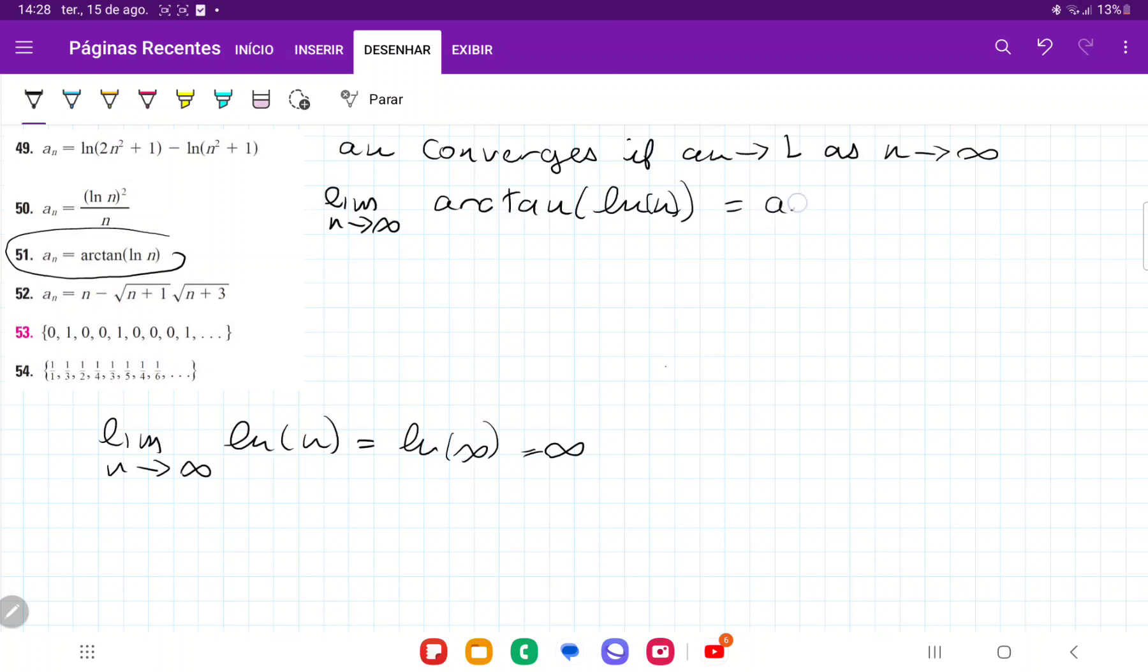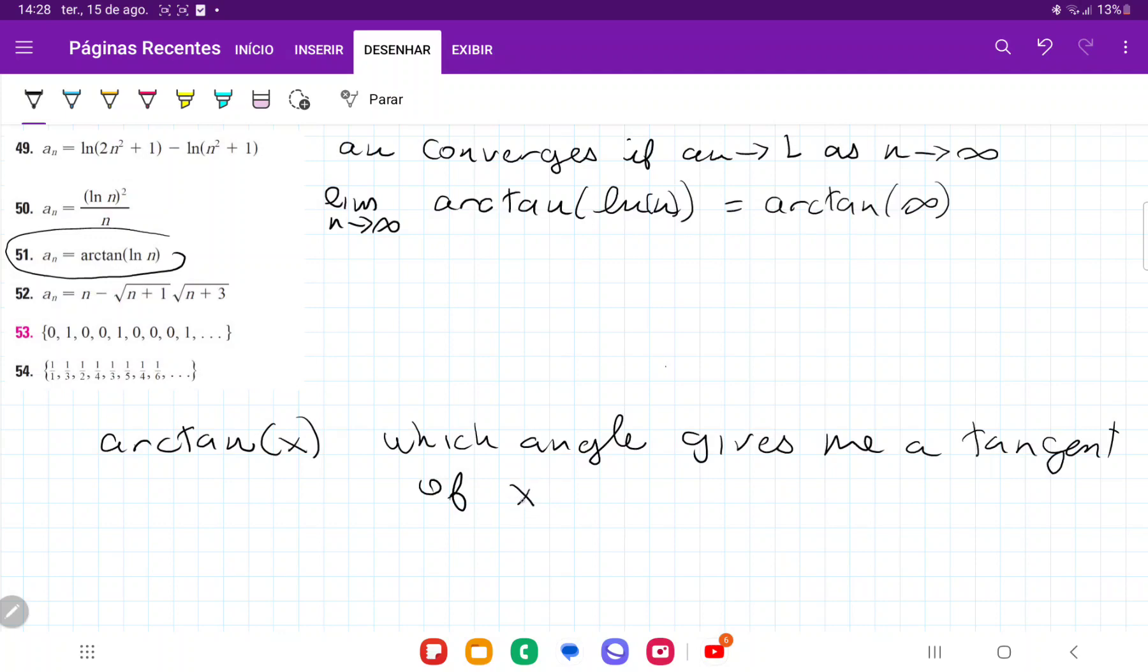So this is going to be arctan of infinity. And let's think about what arctan of infinity means. So basically arctan, arctan of x asks which angle gives me a tangent of x. So basically arctan of infinity is asking which angle gives me a tangent of infinity. And so what we're going to do here is we're going to think of the graph of tangent.